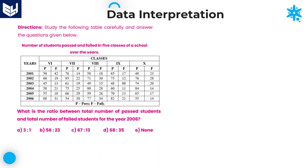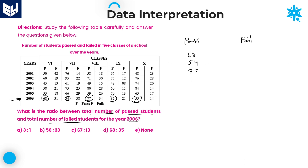Let's see the next question: What is the ratio between total number of passed students and total number of failed students in 2006? First, write down all the passed values. Passed students in 2006: 68, 54, 77, 82 and 55.